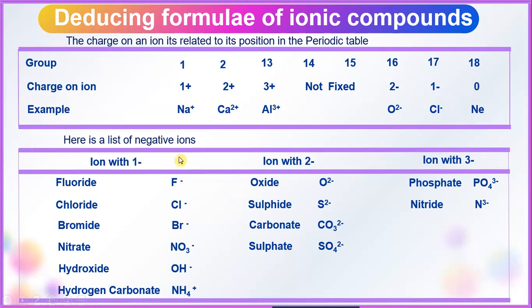Here is a list of negative ions. Ions with 1− charge — examples: fluoride, chloride, bromide, nitrite, hydroxide, hydrogen carbonate. An ion with 2− is sulfate. An ion with 3− is phosphate and nitrate.